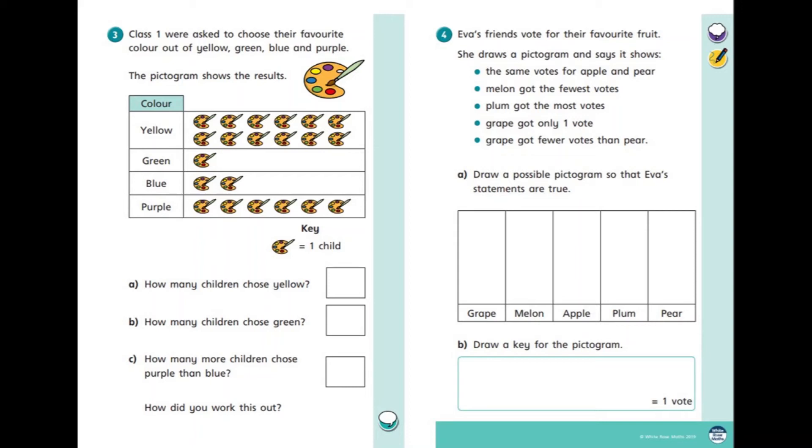And lastly Eva's friends vote for their favorite fruit. Use the statements below to create your own pictogram using the chart given to you as well. Remember to draw a key for the pictogram as the most important bit to do.